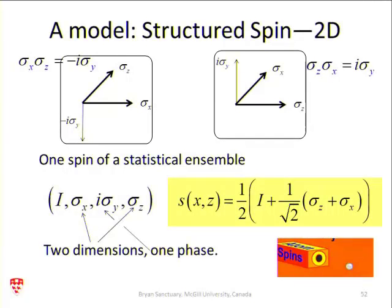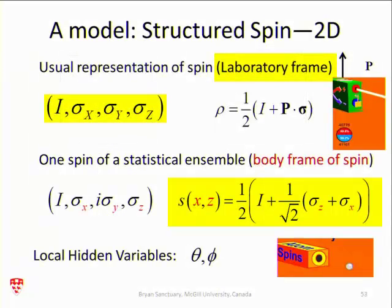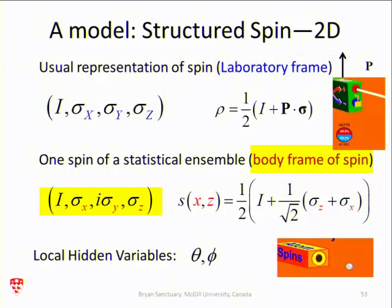And that's why you get this form. So it is important for me to mention that this is done in the laboratory frame. This is the laboratory frame axis. Let's say it's the P-direction or the Z-direction. This is a body-fixed frame of every spin. Every spin that comes out of there randomly has a different body-fixed frame. So I have local hidden variables here, which are the angles theta and phi, that relate this coordinate system to the laboratory frame. So every spin comes out oriented differently.